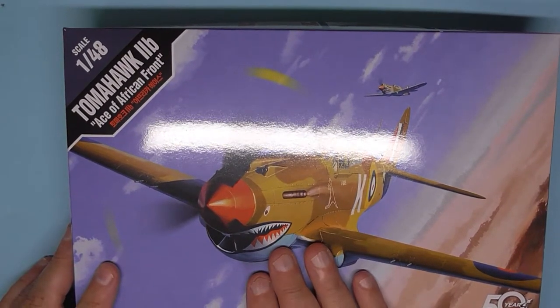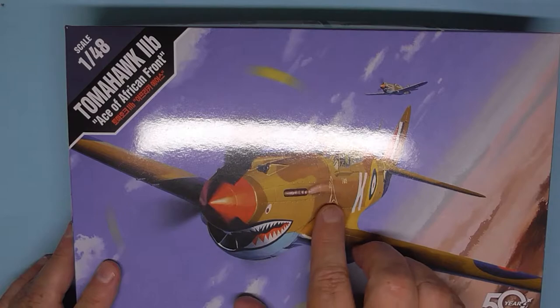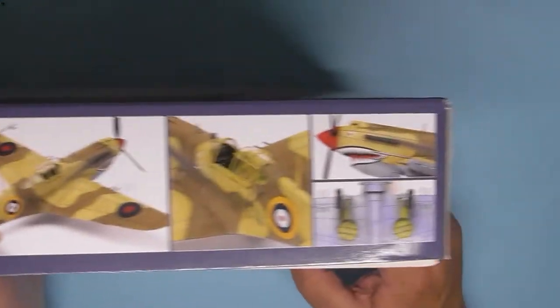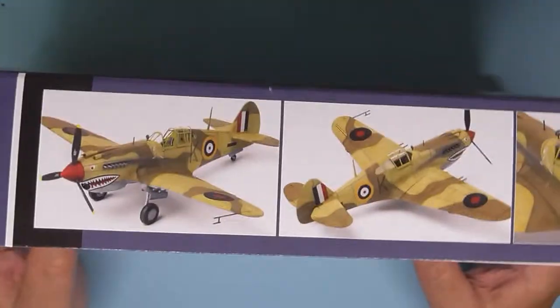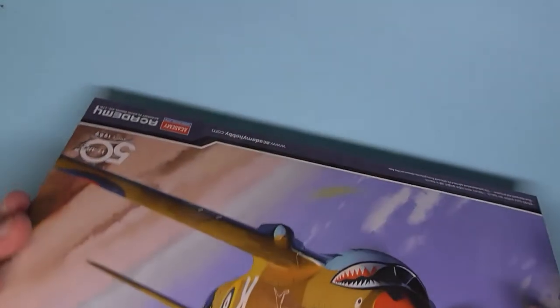Nice Tomahawk in desert colors there, with a kangaroo on the fuselage by the looks of it, shark's mouth, some nice shots of the completed aircraft on the side. This side, safety instructions in many languages and that's it really.